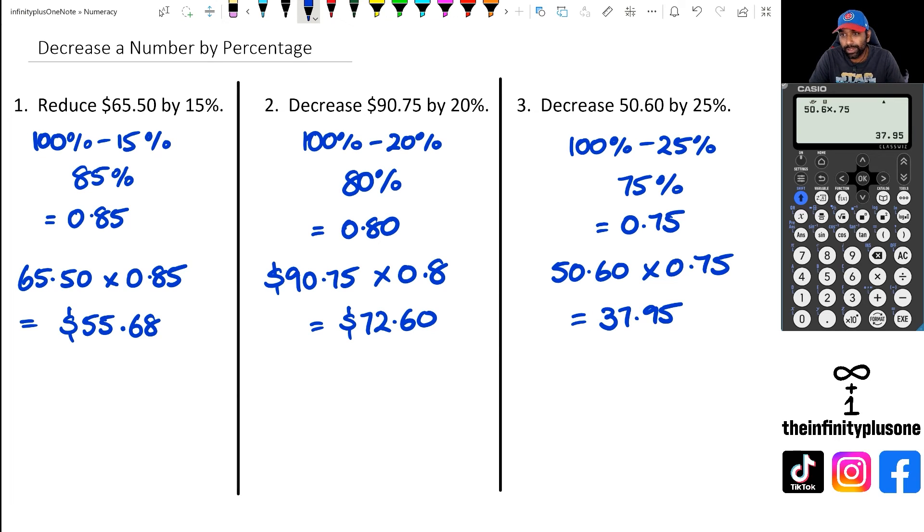So just keep in mind that when you're decreasing a number by percentage, all you got to do is figure out the percentage of that number and then you just go number minus whatever that is, and that's what we've done here with the calculator but in a really quick way.